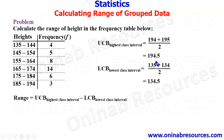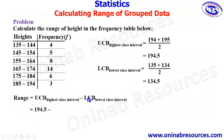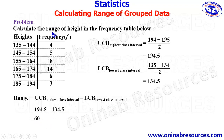We then substitute the two values into our formula. The upper class boundary of the highest class interval is 194.5, minus the lower class boundary of the lowest class interval, which is 134.5. So 194.5 − 134.5 = 60, which represents the range of heights in the frequency table provided for this problem.